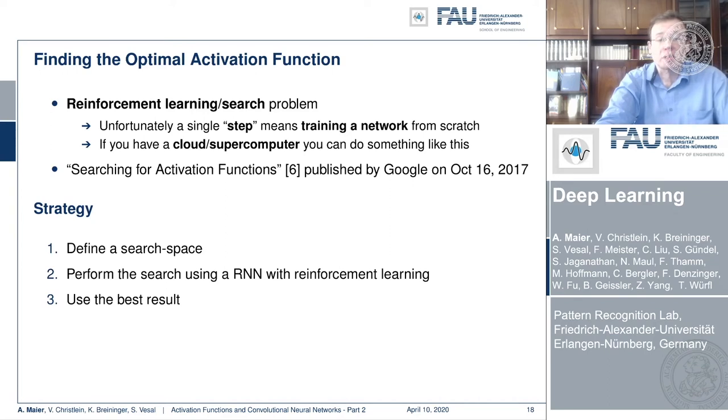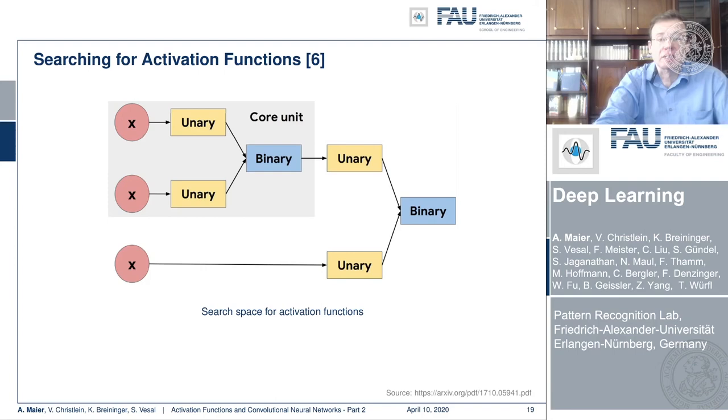So the strategy was to define the search space, then perform the search using a recurrent neural network with reinforcement learning. And in the end, they want to use the best result and then repeat the procedure. The search space that they used is that they put in X into some unary functions. Then these unary functions were combined using a binary core unit. And this could then be merged again unary with another instance of X that was then really produced to the final output using a binary function.